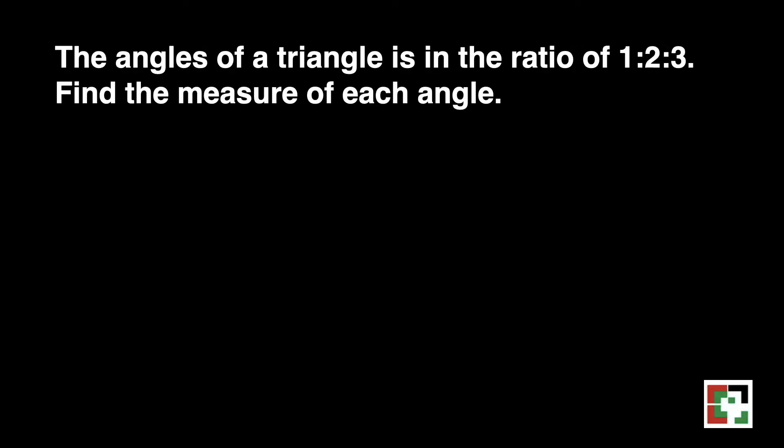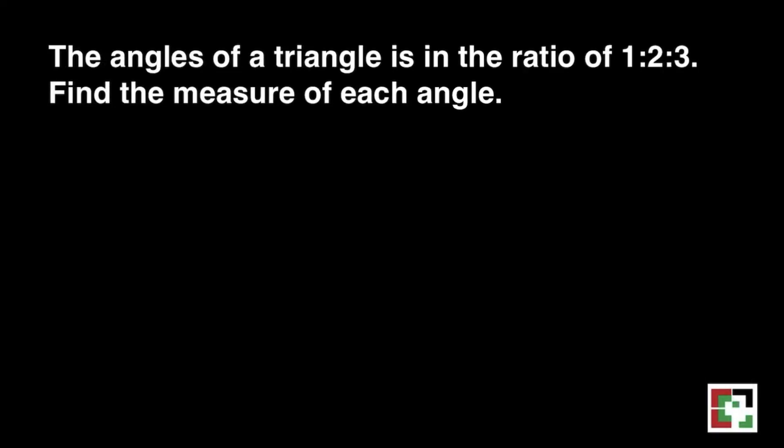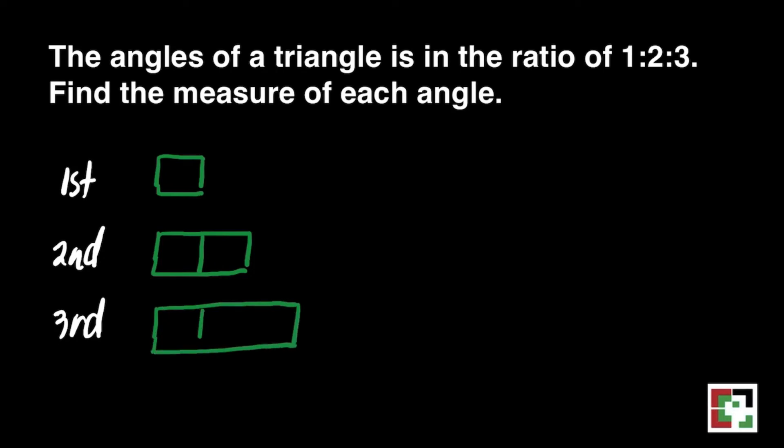We have the last problem. The angles of the triangle is in the ratio of 1 is to 2 is to 3. Find the measure of each angle. We will write first the angles, that's 1st, 2nd, and 3rd angle. Next, we have 1 box for the first angle, 2nd, we have 2 boxes, and 3rd, 3 boxes.